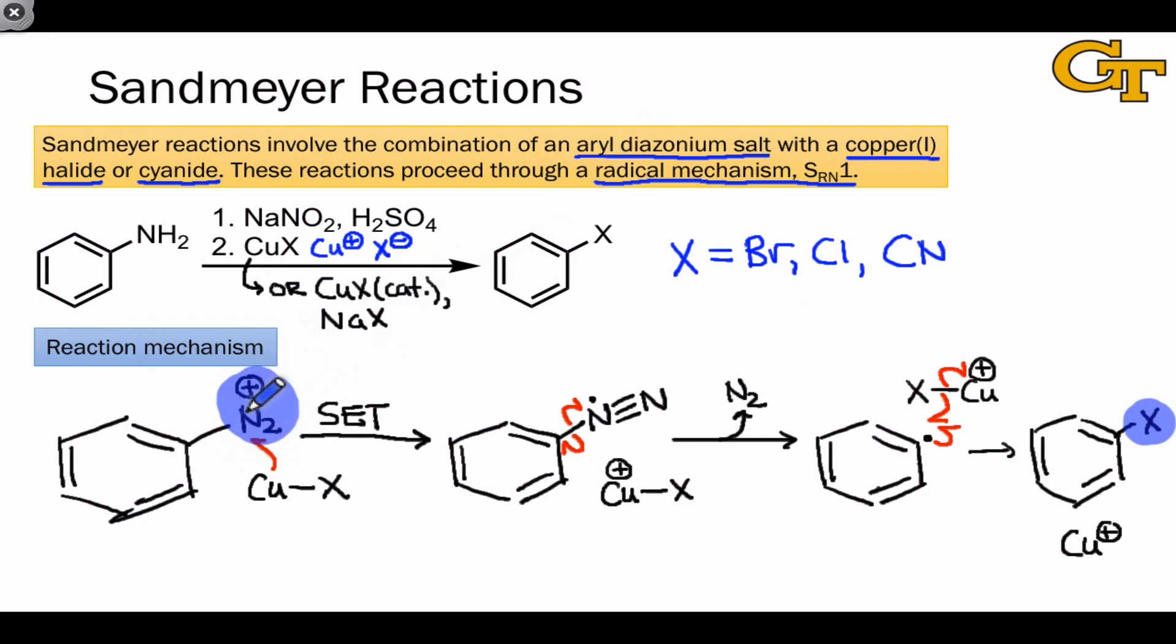Since we're installing at a position where an electron withdrawing group is located, and this could be generated from an aniline, as shown up here, we can get bromine or chlorine in a position where we had a nitrogen in the first place, and that can be a useful transformation.